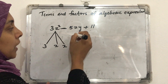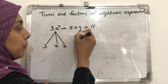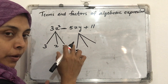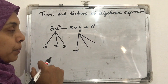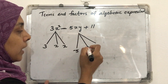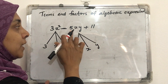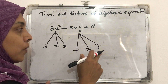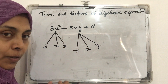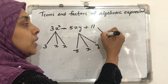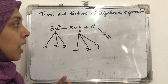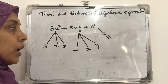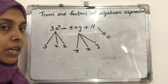Now for the second term: how is minus 5xy formed as the product of factors? The numerical part is minus 5, and the other factors are x and y. So the second term is formed as the product of minus 5 × x × y — those are the factors of the second term. The third term is the constant 11, which we can write as 1 × 11, so its factors are 1 and 11.